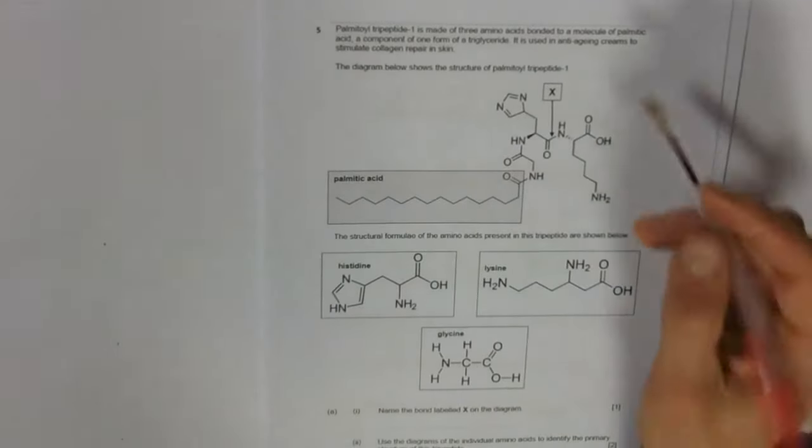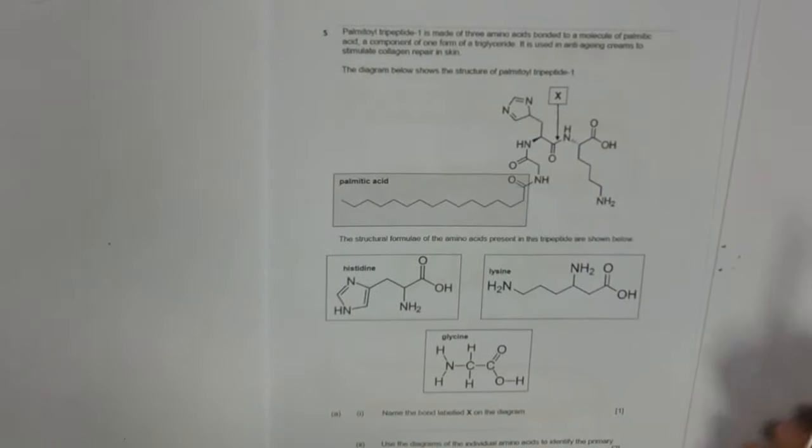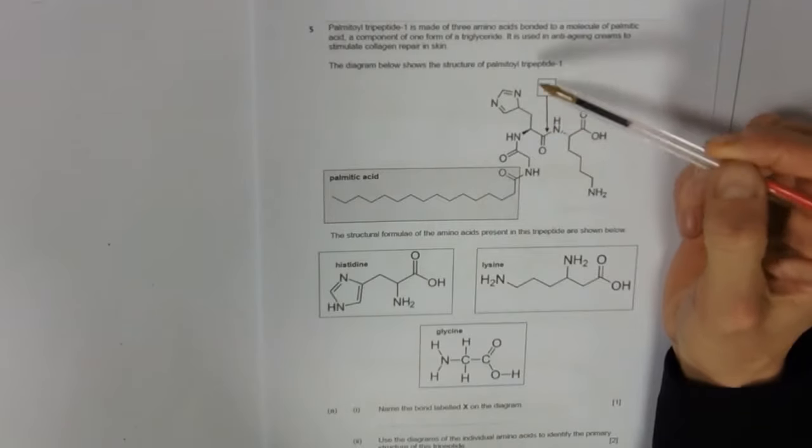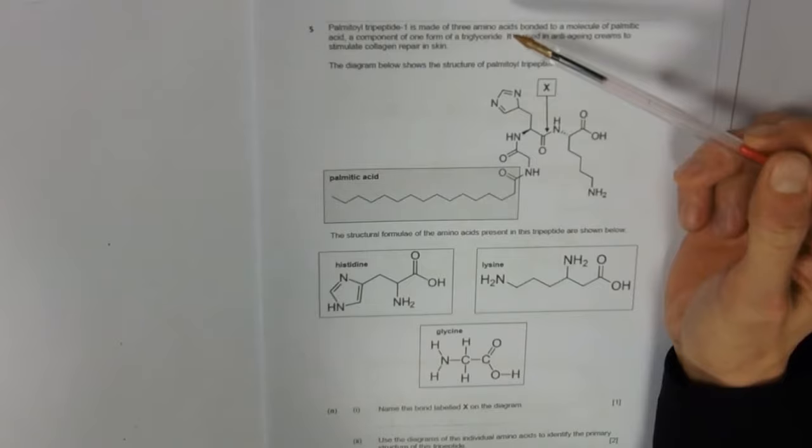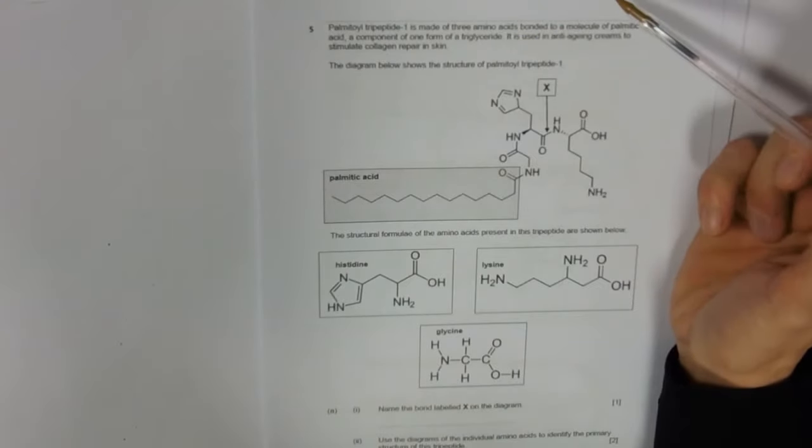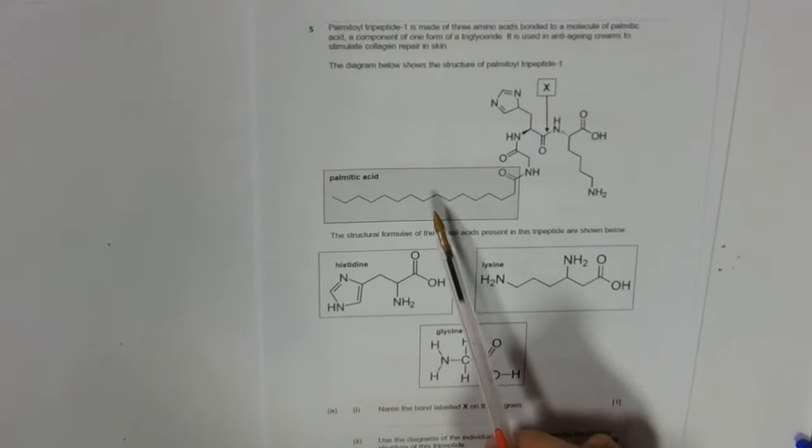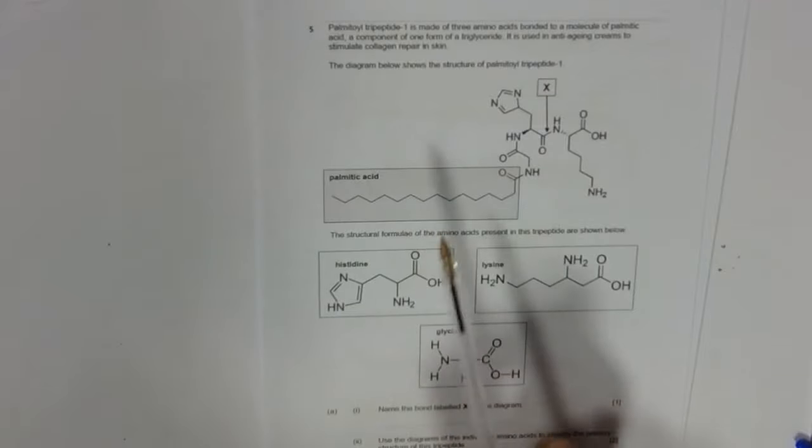This is question five of the core concepts class task book. A frightening looking molecule there - palmitoyl tripeptide one is three amino acids bonded to a molecule of palmitic acid, which is shown there. You're reminded that these are actually in triglycerides, like a fatty acid.